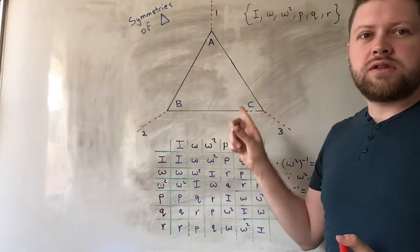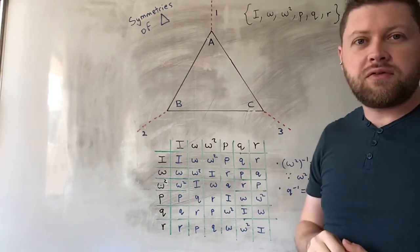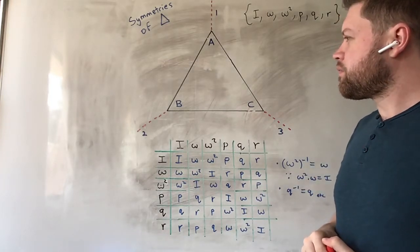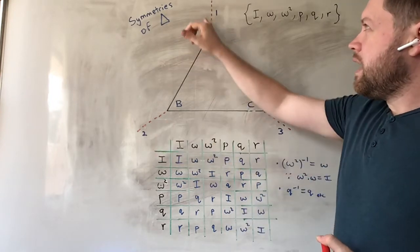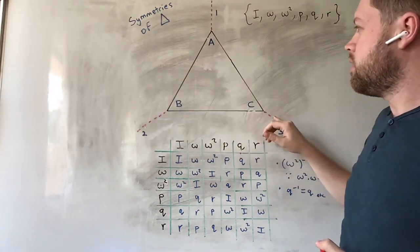So, what can we do to this triangle that will result in it looking the exact same? Well, we can do a few different things. The first thing you can think about is if we label the axes of symmetry, these lines of symmetry here, 1, 2, and 3.